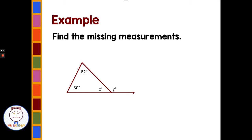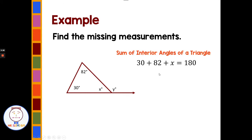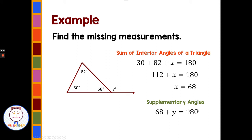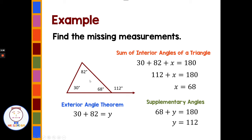What if we're asked to find the missing measures when we have both x and y missing? We have two given angles that are remote interior angles — they're furthest away from the exterior angle y. We can start with the sum of interior angles: 30 plus 82 plus x would equal 180, so subtract 112 from each side and x is 68. Then for angle y, 68 plus y equals 180 — they are supplementary — so subtract 68 and y is 112.